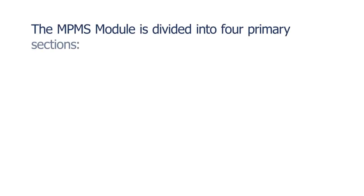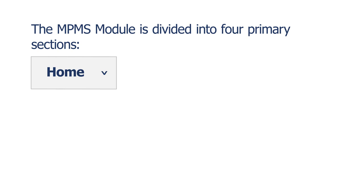The MPMS module is divided into four primary sections. Home, where issuers access announcements pertaining to their applications, metrics about any applications they may have started for the current plan year, and easy navigation to other areas of the system.